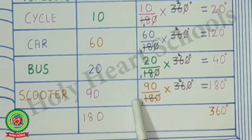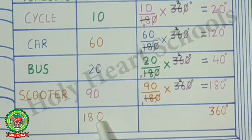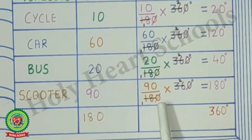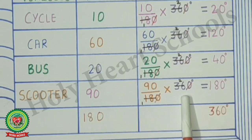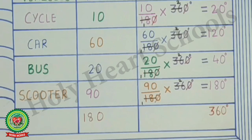The next value is 90. So the given value is 90, total value is 180. So 90 upon 180, multiplied by 360 degrees. After cancellation, multiply 90 by 2, giving 180 degrees.